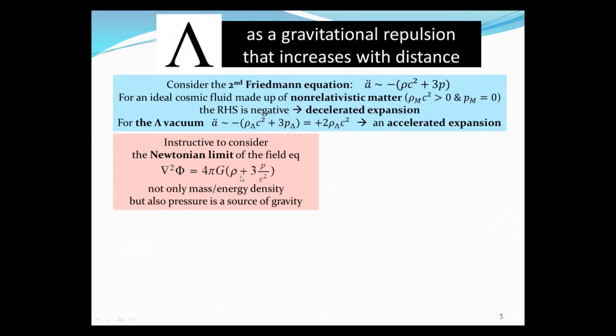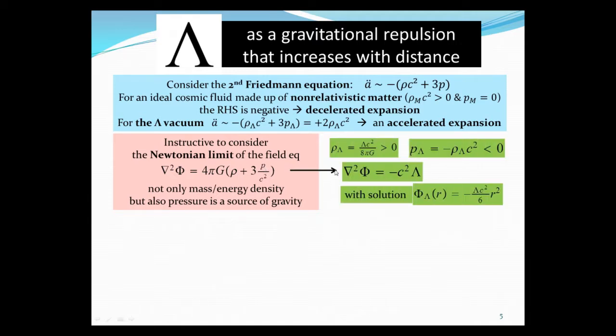Therefore, in our case, we have mass density, energy density, and pressure. The energy density is this, and pressure is minus of this, and we'll put them together here. So the Laplacian acting on the gravity potential is minus c squared lambda, which is positive. The solution of this equation, to give phi_lambda, equals minus lambda c squared over 6 times r squared. You can plug in and check, this is the solution.